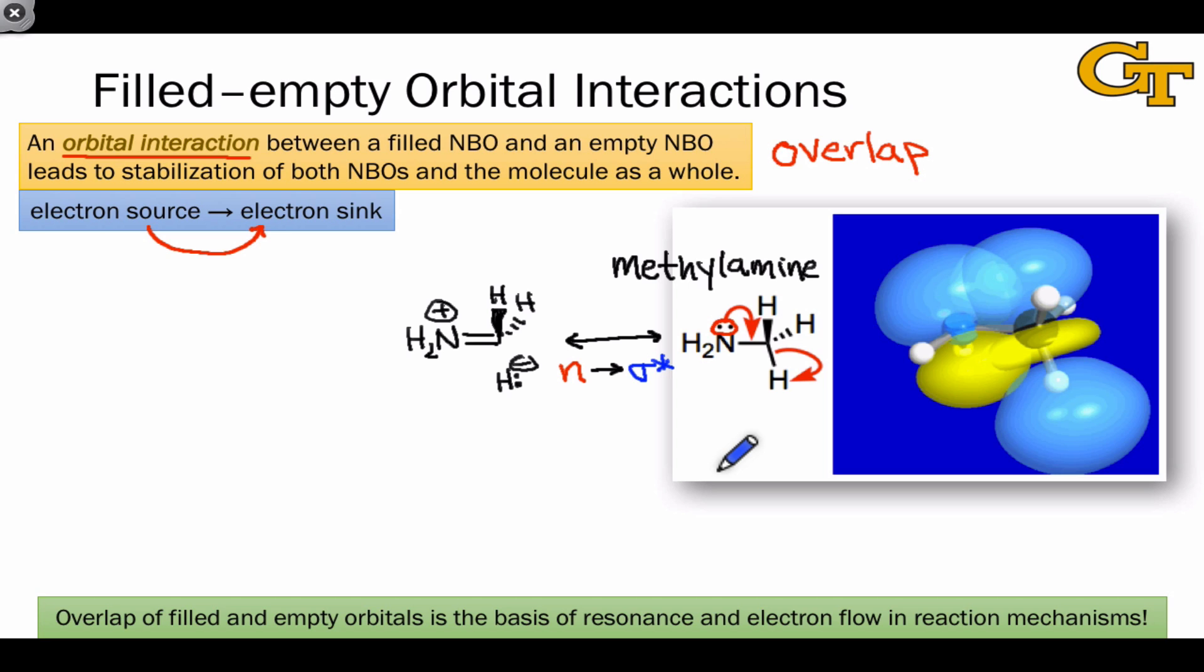We can draw a couple of different pictures to depict the interaction that's going on here. What's shown on the right are the shapes of the N and sigma star orbitals that are overlapping to produce this interaction. Here's the source orbital, an sp3 hybrid on nitrogen, and here's the sink orbital, an antibonding orbital associated with the CH bond.